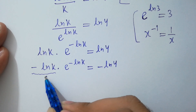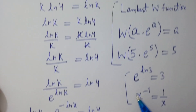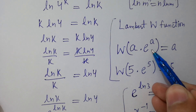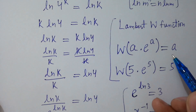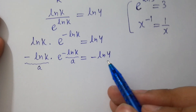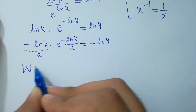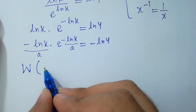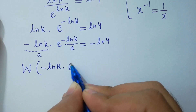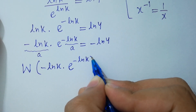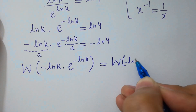You can see here: minus ln k is equal to A, and e to the power minus ln k is also equal to e to the power A, which looks like A times e to the power A. If we apply the Lambert W function it will be equal to A. So applying Lambert W function on both sides: W of minus ln k times e to the power minus ln k equals W of minus ln 4.